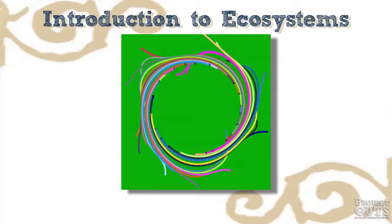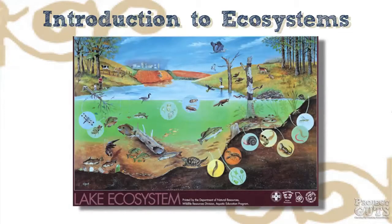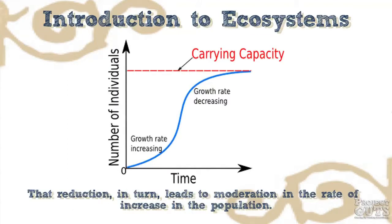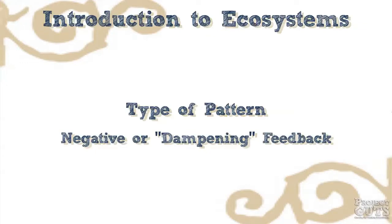Another characteristic of most complex systems is feedback. Feedback is a circular process in which a system's output is returned, or fed back, into the system as input. For example, if we look at the ecosystem of fish in a pond, assuming the fish are not being consumed by predators, we see that as the population approaches the carrying capacity of the pond, the rate of population growth decreases because of limits in required resources, like oxygen in the water. So the increase in the fish population leads to a reduction in the necessary resources available to each member of the population. That reduction, in turn, leads to moderation in the rate of increase in the population. We will see this type of pattern, called negative or dampening feedback, in the participatory simulation and models that accompany this module.